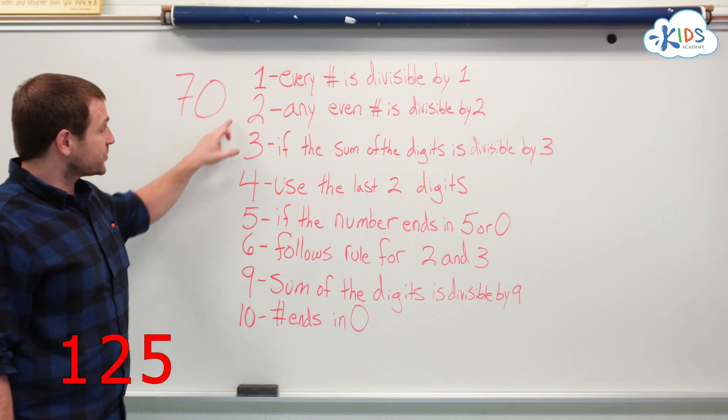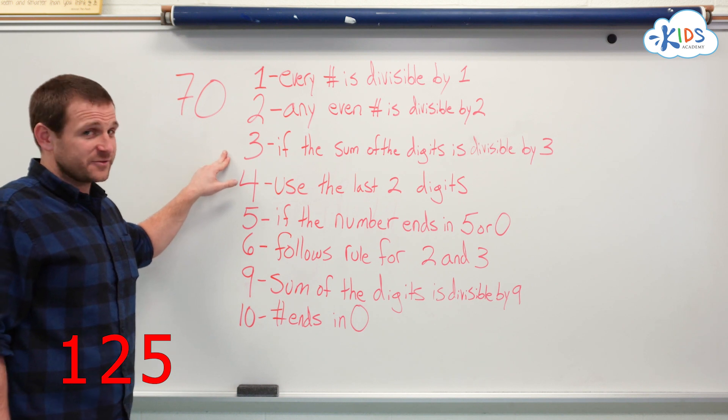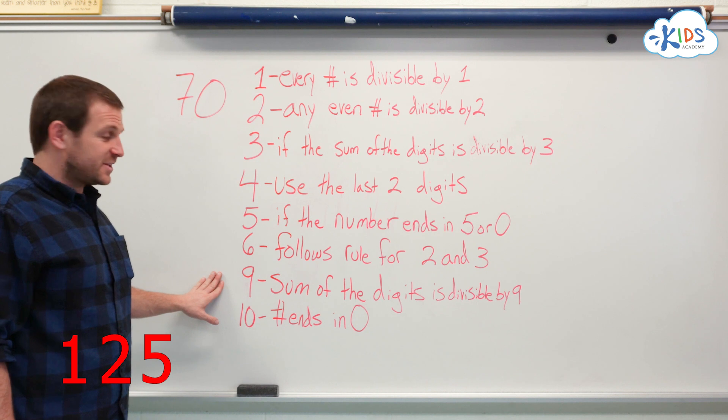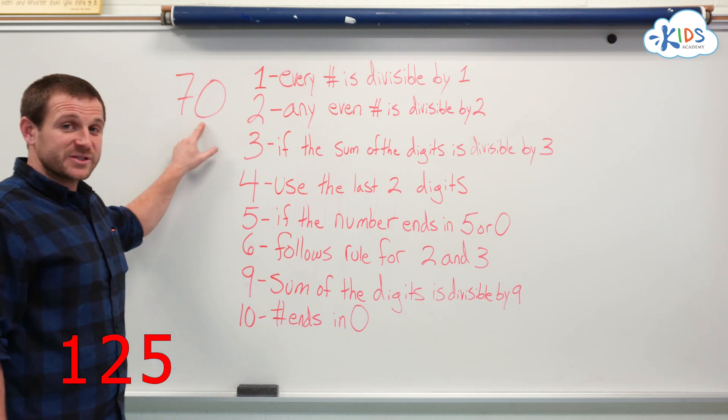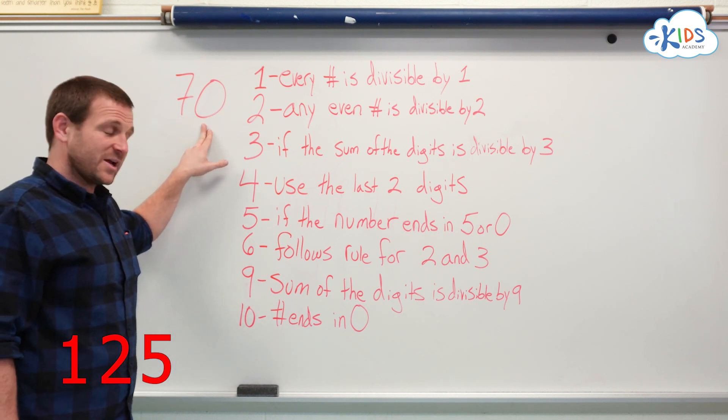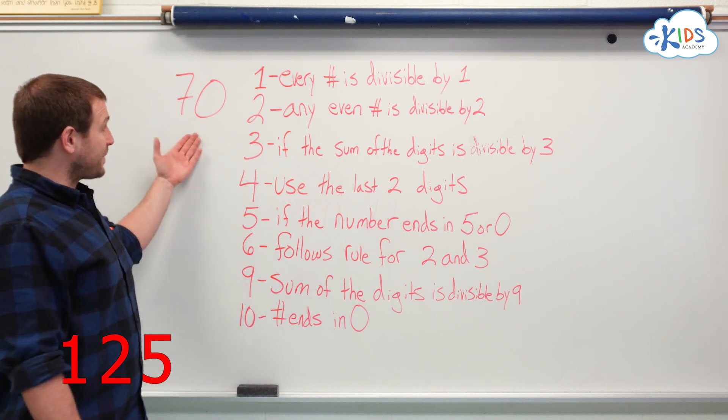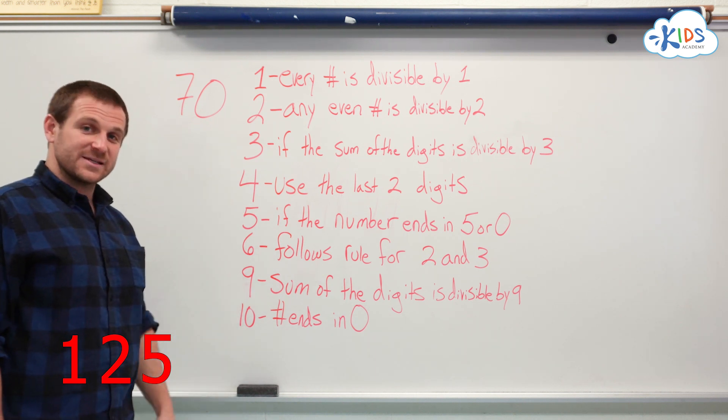It did not follow the rules for 2 and 3. Remember, it was not divisible by 3, so it can't be divisible by 6. The sum of the digits divisible by 9. 7 plus 0 is 7, not divisible by 9. And 10. Does it end in a 0? Absolutely ends in a 0, meaning it is divisible by 10.